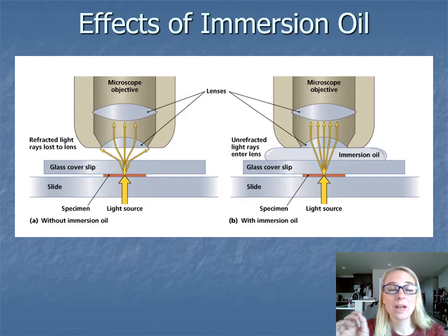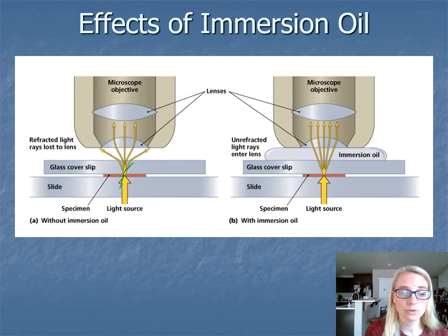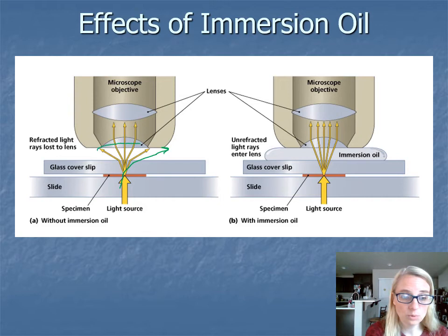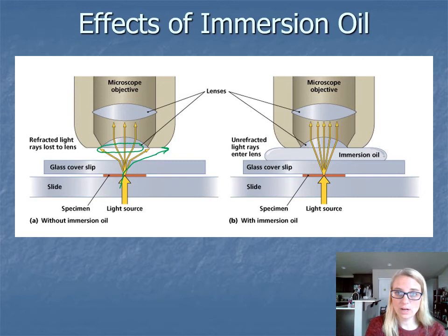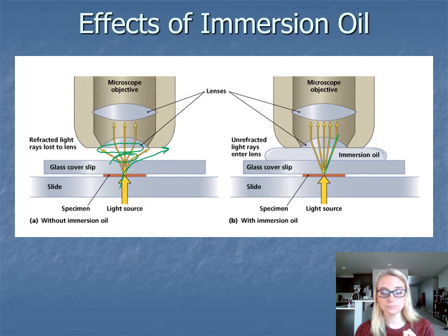When looking at bacteria under oil immersion, bacteria are really small and we need the oil immersion objective to see their characteristics. Light refracts as it passes through different media — air, glass, specimen, glass — and with a very small objective opening, some light can be lost. By placing a bead of immersion oil and putting the lens directly into it, the oil has the same refractive properties as glass, so light goes straight up into the objective instead of bending away. Only use immersion oil on the 100x objective — never on any other objective.